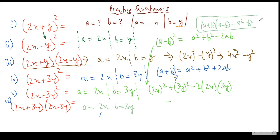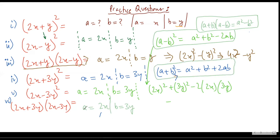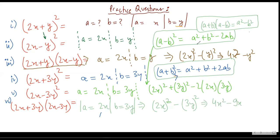My a is 2x and my b is 3y. I will be using (a + b)(a - b) = a² - b². I have mentioned my a and b — now I can start the question. So this will be a² - b²: (2x)² minus (3y)². This would be equal to 4x² - 9y².